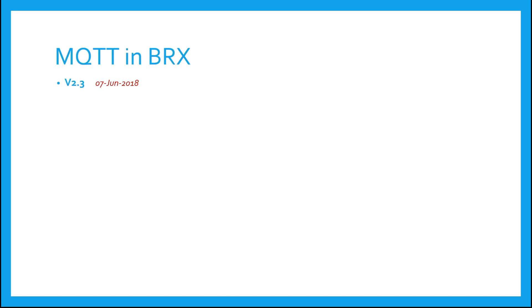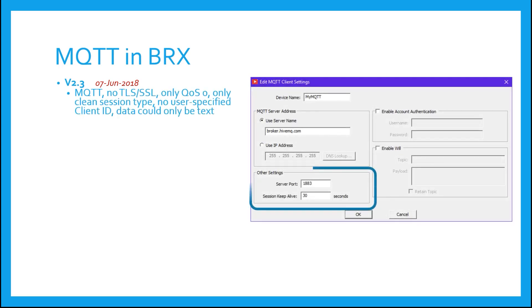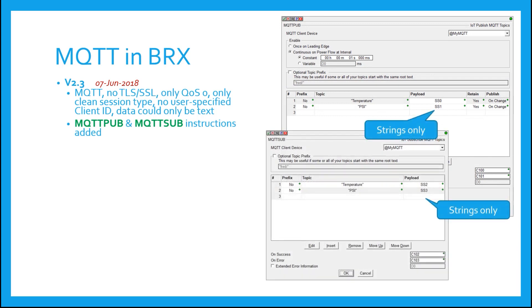MQTT was introduced in Do More Technology version 2.3 in June of 2018. It had no TLS or SSL encryption support, only supported a QoS of 0, only a Clean Session Type was allowed, there was no user-specified client ID allowed, and the only data you could publish was text. Whatever was subscribed to was stored in text in the BRICS, meaning if the data you needed was a numeric, you had to use other Do More instructions to convert it from a string to a numeric. The MQTT PUB and MQTT SUB instructions were also added to facilitate using MQTT in a BRICS PLC.